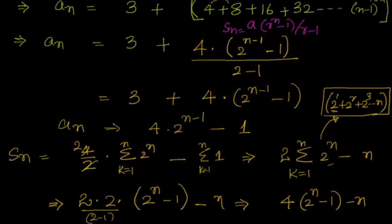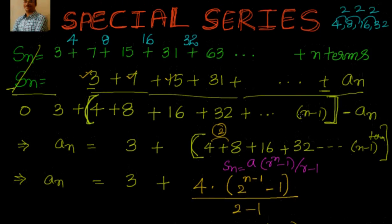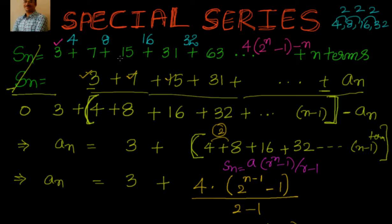Let's verify Sₙ = 4·(2ⁿ − 1) − n. For n = 1: 4·(2 − 1) − 1 = 4 − 1 = 3. Correct. For n = 2: 4·(4 − 1) − 2 = 12 − 2 = 10, which equals 3 + 7. Correct. For n = 3: 4·(8 − 1) − 3 = 28 − 3 = 25, which equals 3 + 7 + 15. Correct.